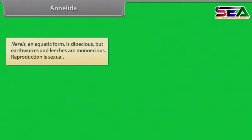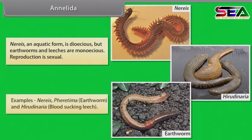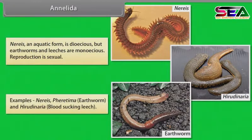Aquatic forms like Nereis are dioecious, but earthworms and leeches are monoecious. Reproduction is sexual. Examples: Pheretima, i.e. earthworm, and Hirudinaria, i.e. blood-sucking leech.